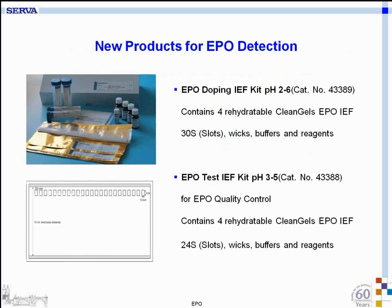The new products we have for EPO detection are two different kits. One is for EPO doping isoelectric focusing with a pH interval of 2 to 6, containing four rehydratable clean gels with 30 slots for samples each, along with wicks, buffers, and reagents. The other kit has a pH interval of 3 to 5, used by the producing industry for EPO quality control, as they prefer a slightly different pH interval. It also contains four rehydratable gels with 24 slots, wicks, buffers, and reagents.